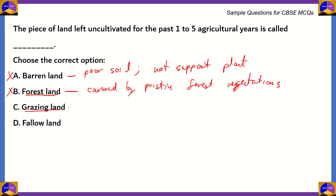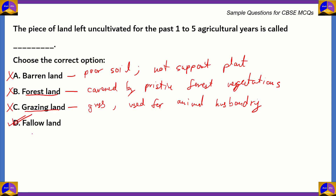What about option C, grazing land? These are areas which contain grass as the primary vegetation and they are used for animal husbandry. You have herders coming over from various areas onto grazing fields and grazing their cattle to get animal products such as milk, meat, etc. Option C is also incorrect because this land is left uncultivated for the use of animals. The correct option is option D, fallow land. This is usually a general knowledge question, but it can be asked for social studies exams. The piece of land left uncultivated for the past one to five agricultural years is called fallow land.